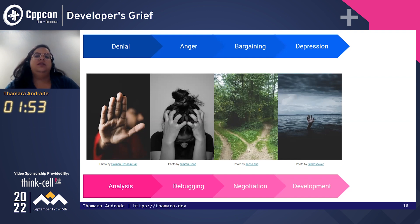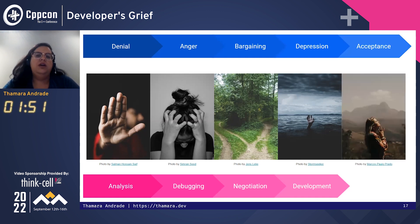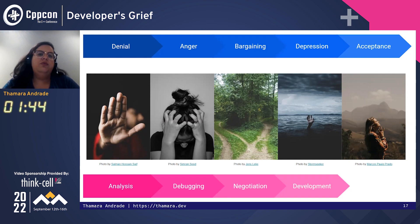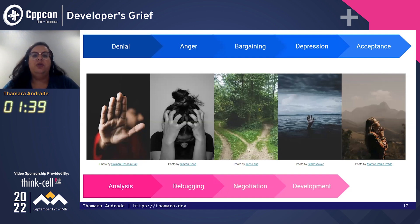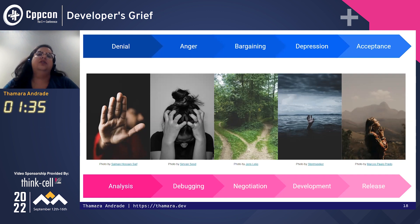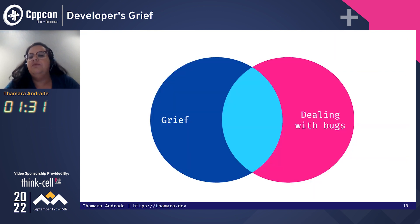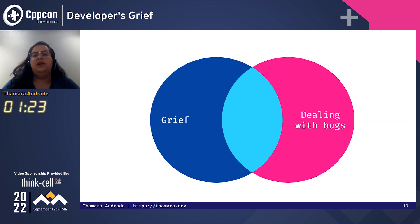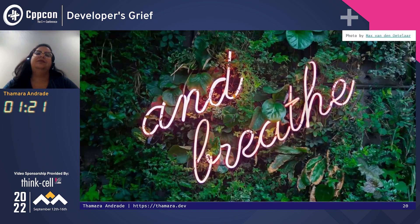The final stage is acceptance. That's when we know that we did all we could do and we move on — learning that we are stronger now and we have more wisdom, and we can finally do the release for the user and complete this stage. So next time you are dealing with bugs, know that there is this intersection, take a breath, and know that you are not alone. Thank you.